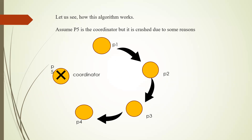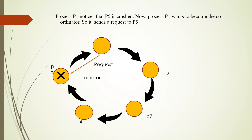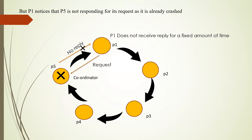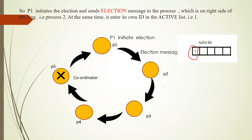Let us see how this algorithm works. Assume P5 is the coordinator but it has crashed. Process P1 notices that P5 is crashed and wants to become the coordinator, so it sends a request to P5 to check whether it is alive. P1 notices that P5 is not responding within a fixed amount of time, so it confirms that P5 is crashed. P1 then initiates the election and sends an election message to P2, its right-side neighbor, and enters its own ID, 1, into the active list.